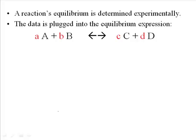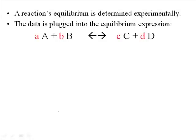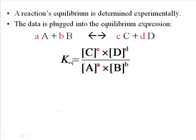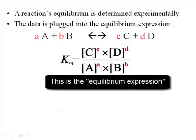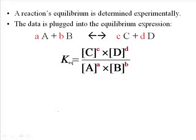Notice that in front of each chemical species — for instance, in front of A — there's a lowercase letter that denotes the stoichiometry, or the coefficient from the balanced equation. The expression itself is simply a fraction that takes the products and puts them on the top, and puts the reactants on the bottom. The stoichiometric coefficients turn into exponents in this expression. So if you had a 2 in front of A, you would be squaring the A.